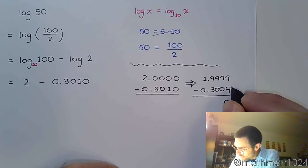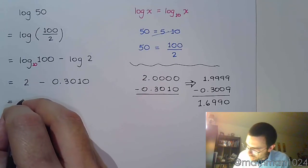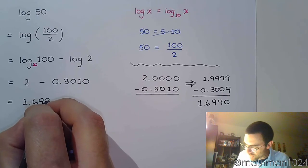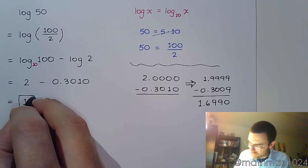9 minus 9 is 0. 9 minus 0 is 9. 9 minus 0 is another 9. Then we get 6 and 1. So there we go. And I didn't have to do all of that borrowing, all that crossing out stuff. And there we go.